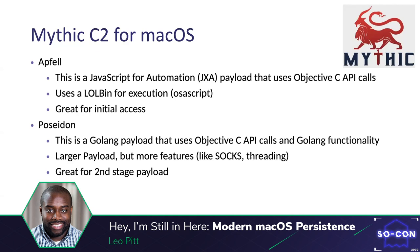Another item to baseline is command and control, or C2. C2 allows us to send commands to compromised systems. Throughout this talk the payload I'll be using is AppVell, which is the JavaScript for Automation, or JXA, payload for the Mythic C2 framework. The AppVell payload through JXA uses Objective-C API calls to interact with the target. JXA is a scripting language for macOS first introduced in macOS Yosemite, or 10.10 — I like to think of it as a poor man's PowerShell for macOS. For standard execution we can leverage the living-off-the-land binary OSAScript, but there are many other ways to invoke the payload, including the LOLbin Automator with workflow files, as well as through compiled dylibs, which I'll cover in this talk.